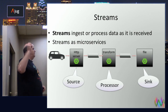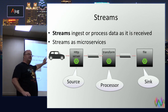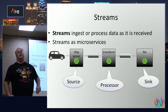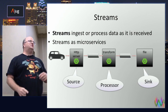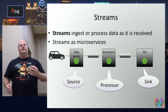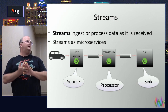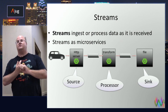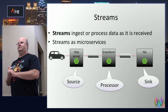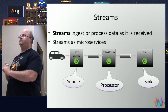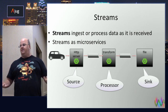We have one source, zero or more processors, and then finally we have a sink. Every stream has exactly one sink. This is where all the data goes and is either persisted somewhere — a file system, HDFS, a database — or maybe it sends out an email, a text, or another TCP message. Effectively it's the end of your stream.